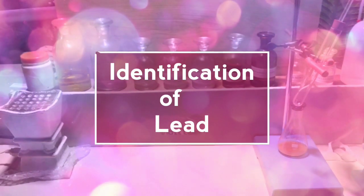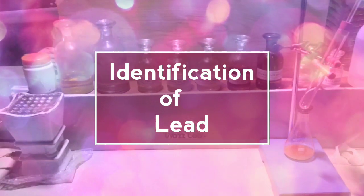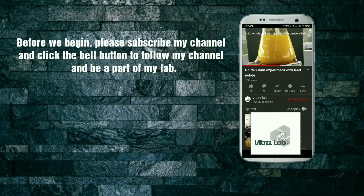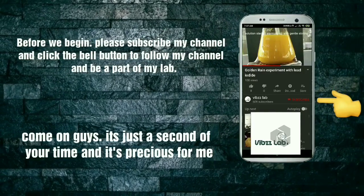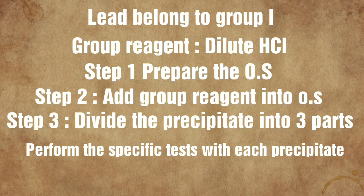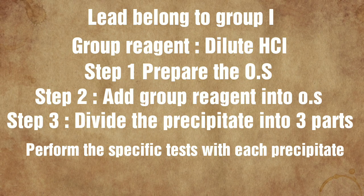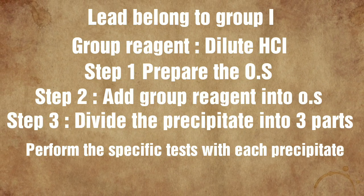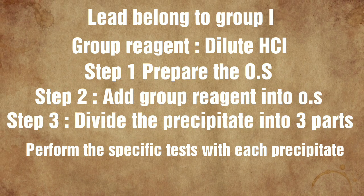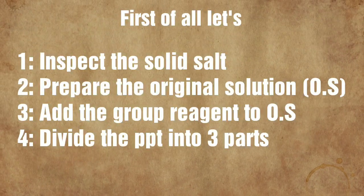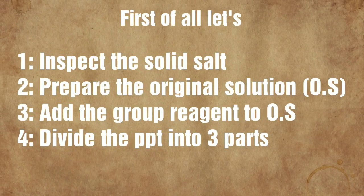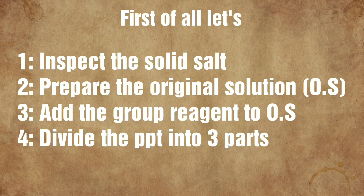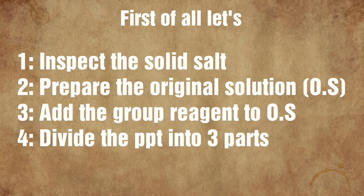Today we will be doing the identification of lead ions. The three basic steps are: prepare the original solution, add the group reagent to the original solution, divide the precipitate into three parts, and perform specific tests. First, we will inspect the solid salt, then prepare the original solution, add the group reagent, and divide the precipitate into three parts.